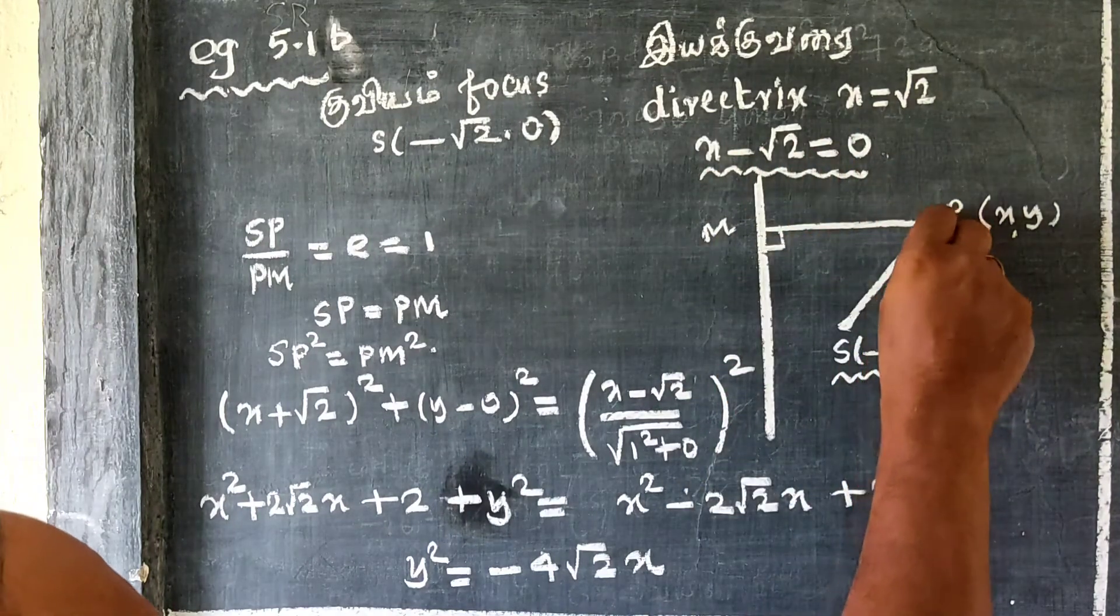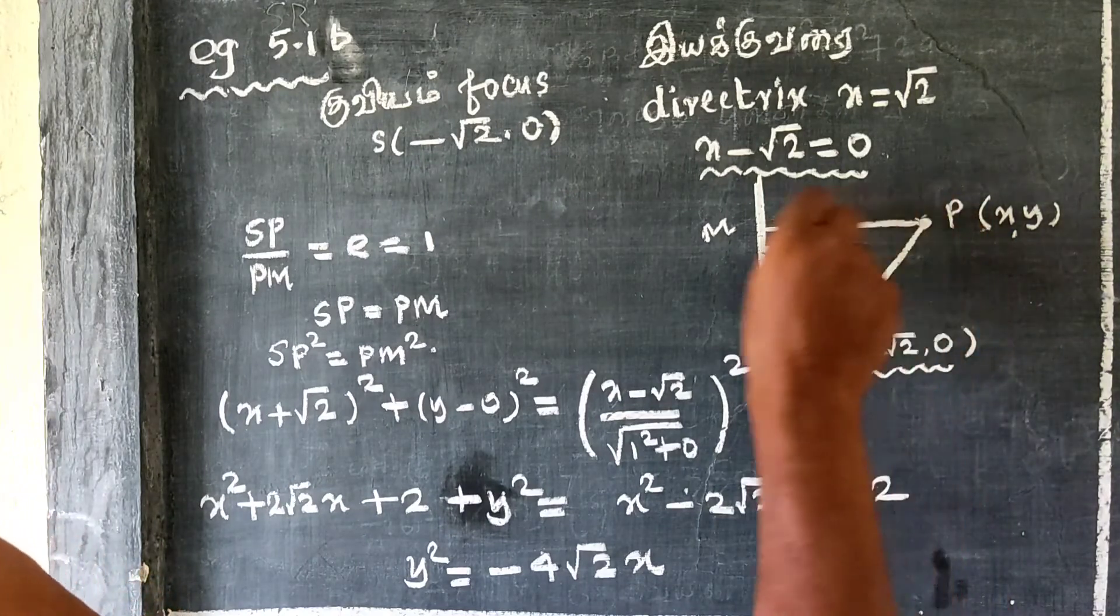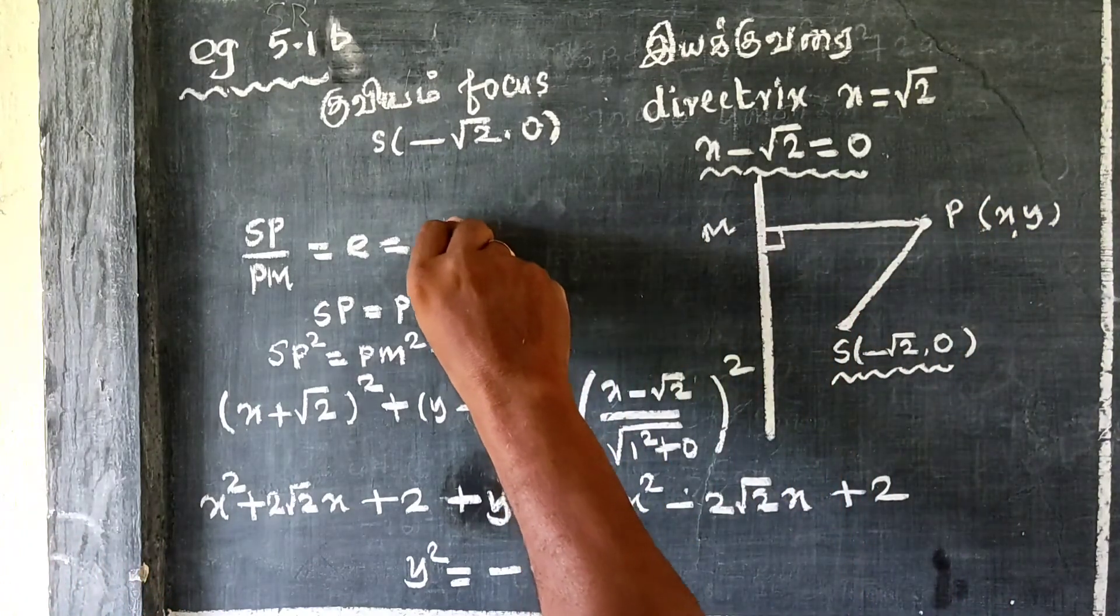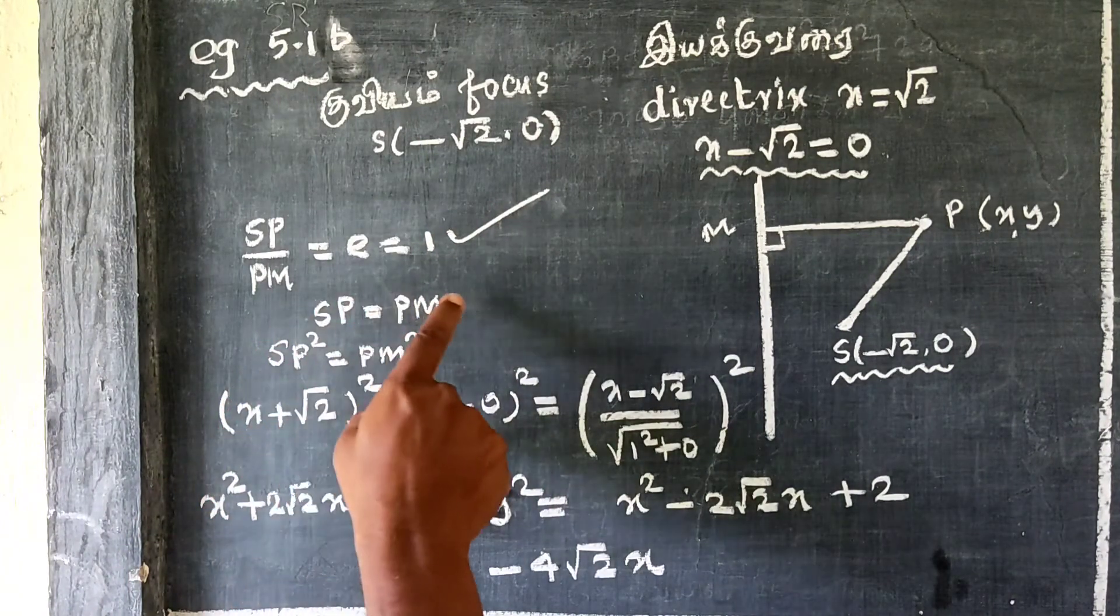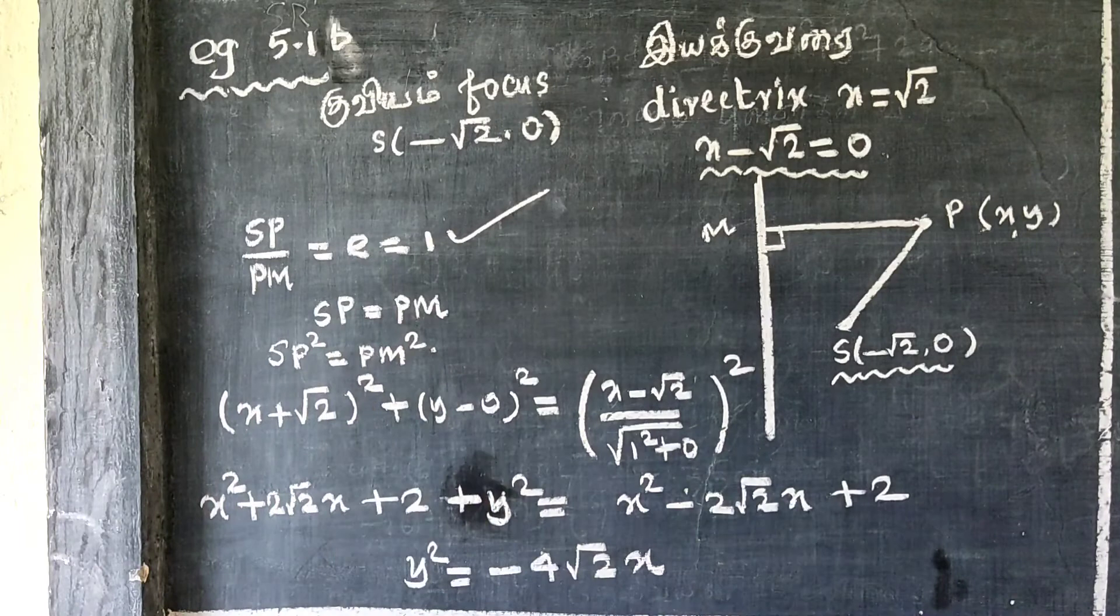For any point on the parabola, SP/PM equals e. For a parabola, e equals 1. Therefore, SB equals PM, so SB² equals PM².